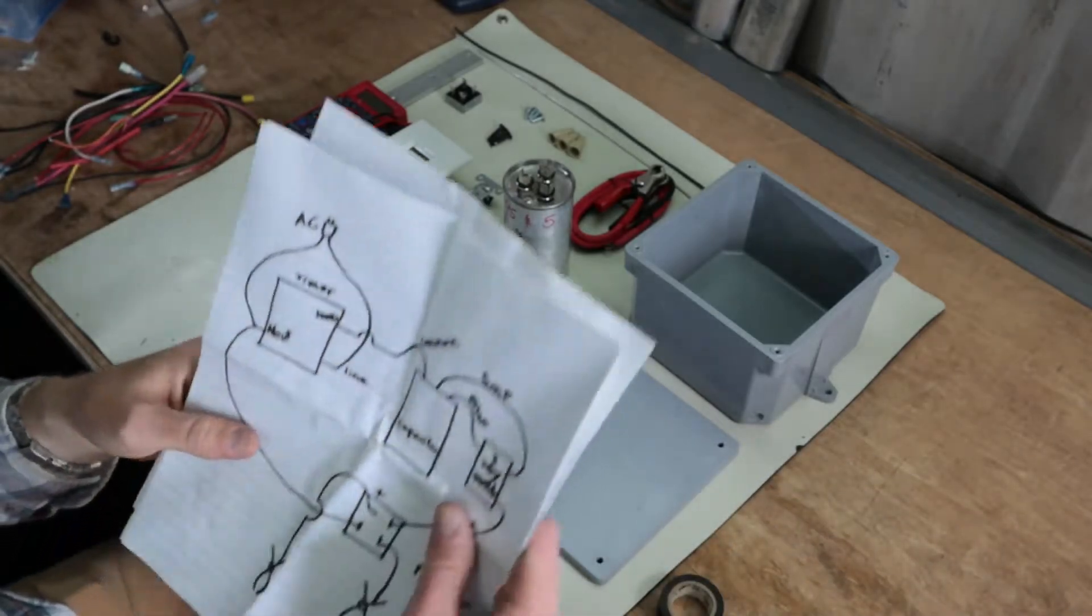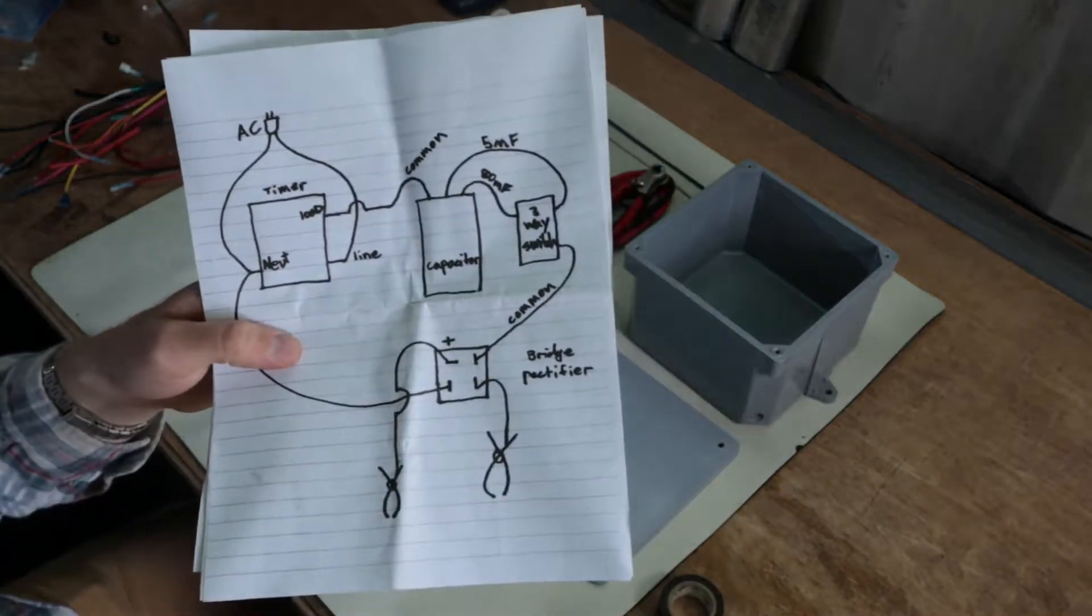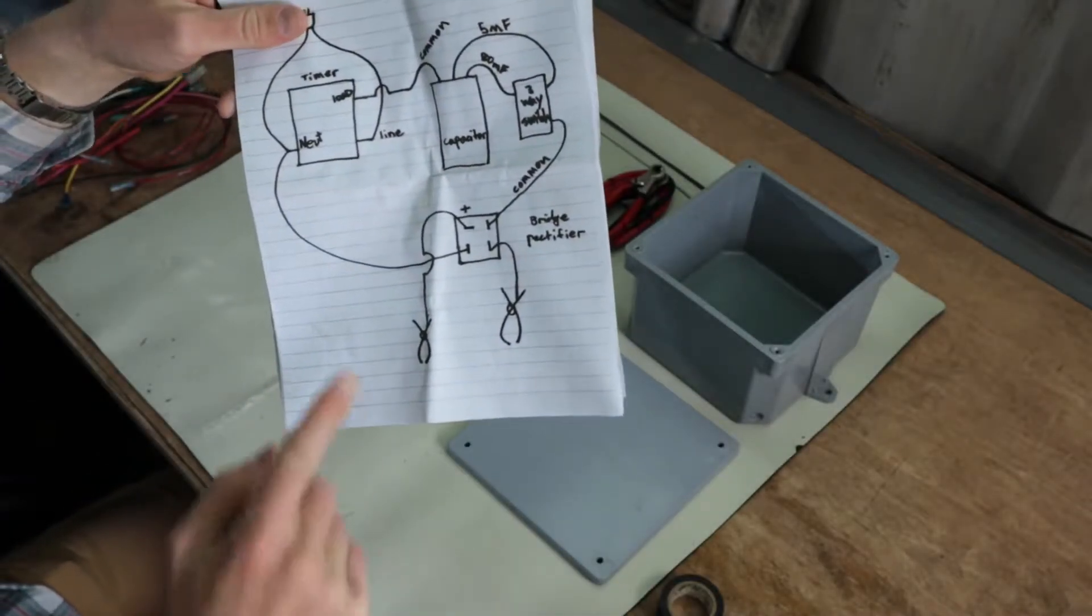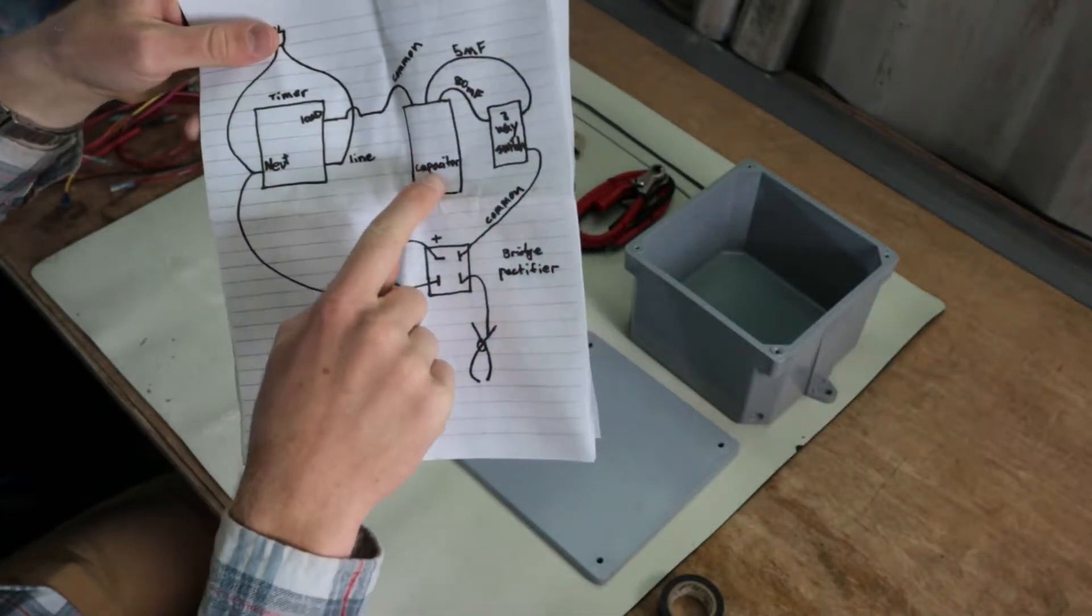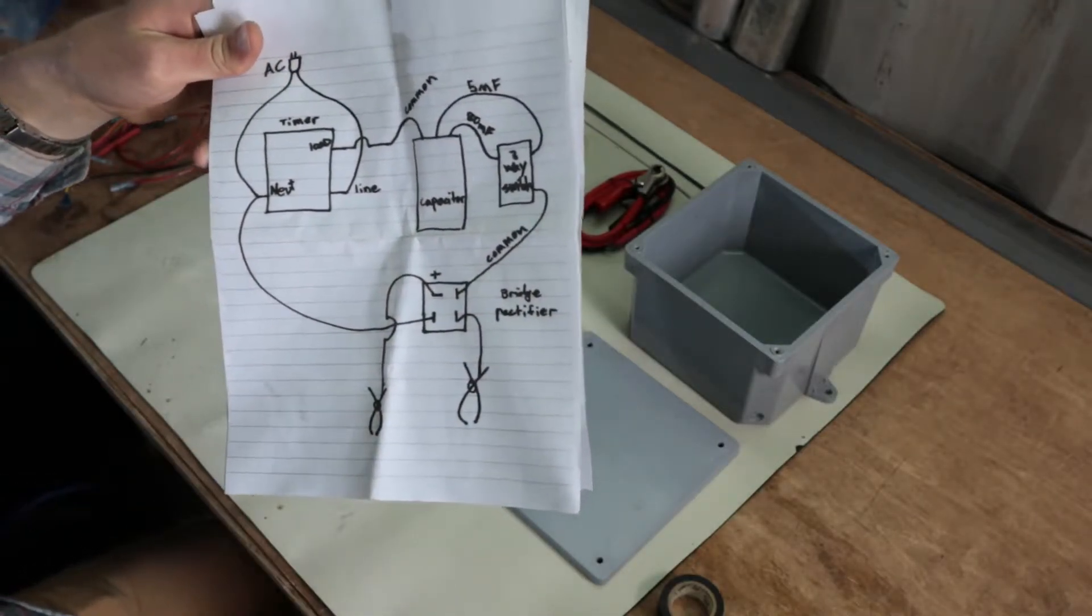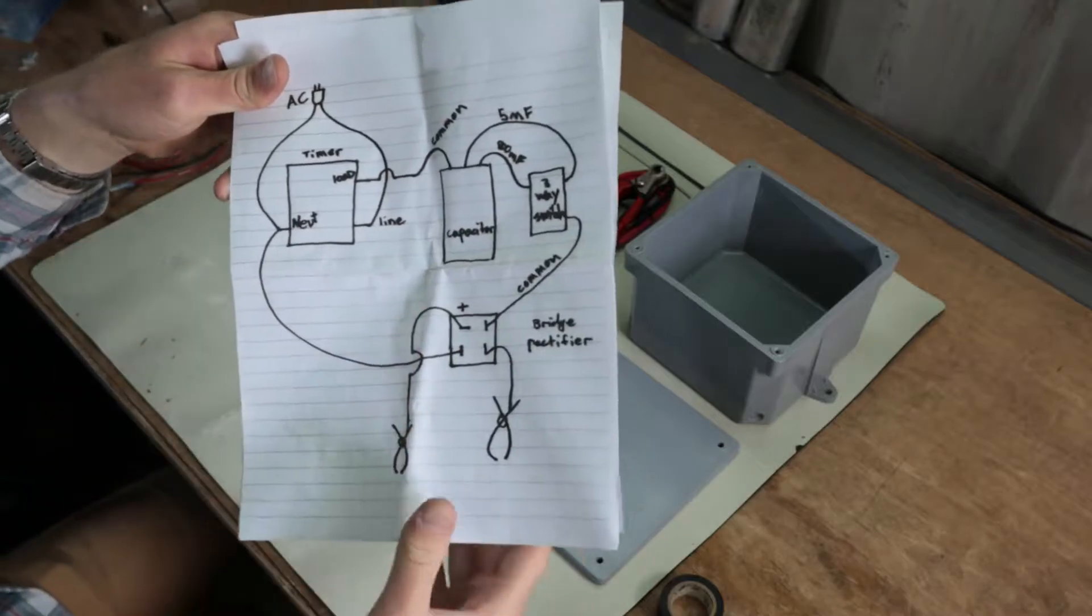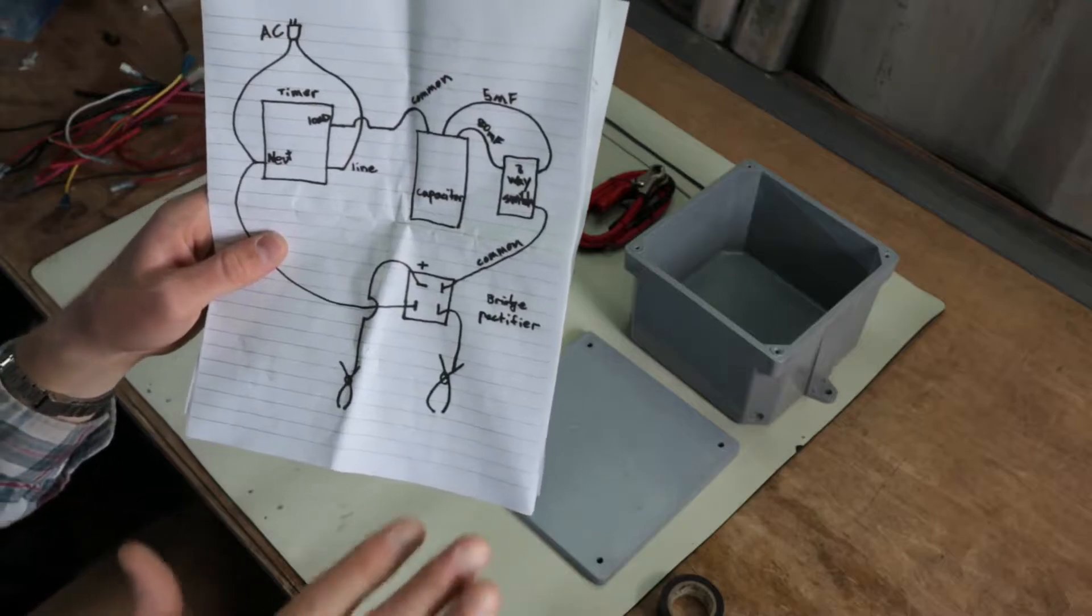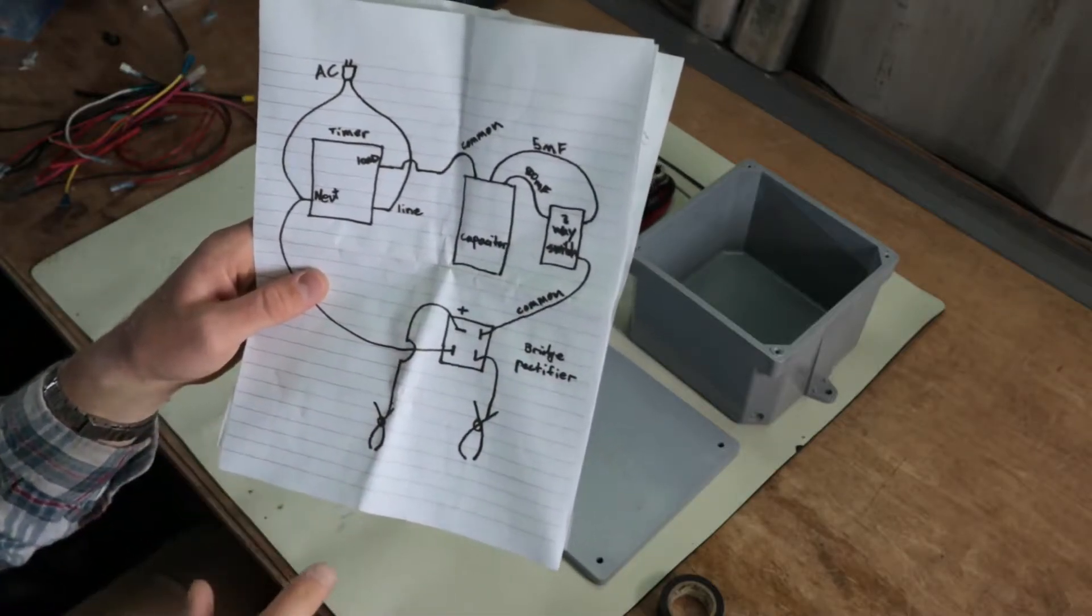Okay, awesome. So first thing we need to do is look at our schematic. So here you can see there's four main components. We've got the timer, we've got the capacitor, we've got our switch, and we've got the bridge rectifier. So as long as all those four main components are in order, this should be pretty easy to wire. So you can see the first thing we want to do is kind of trace where our power is coming in and where it's going to be going out.